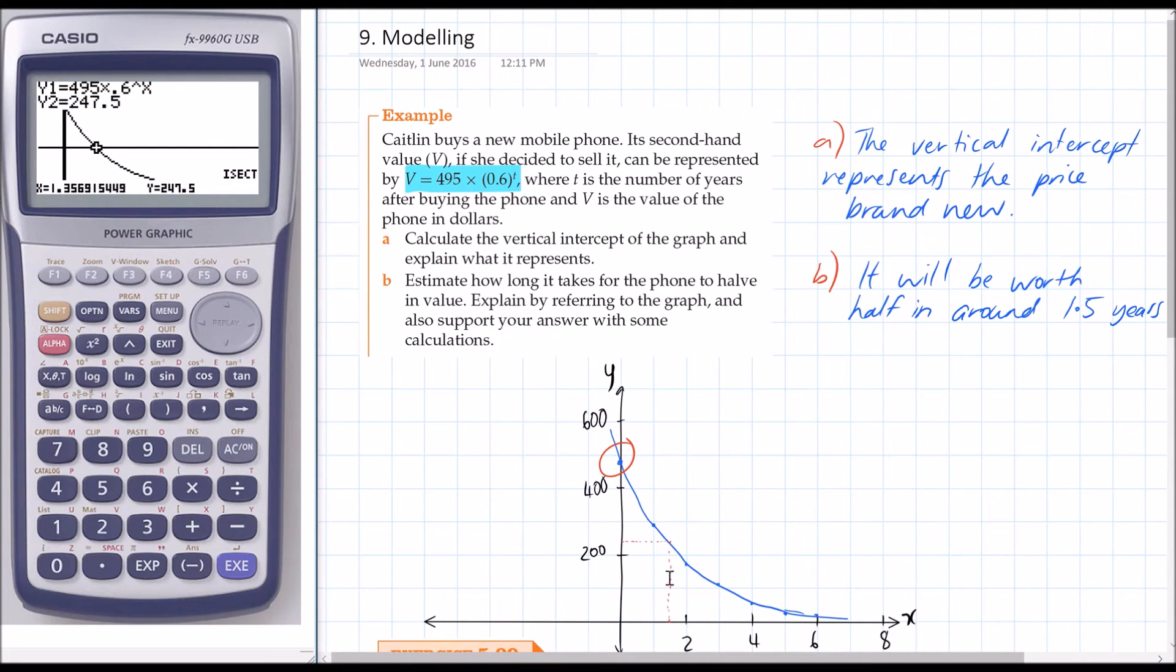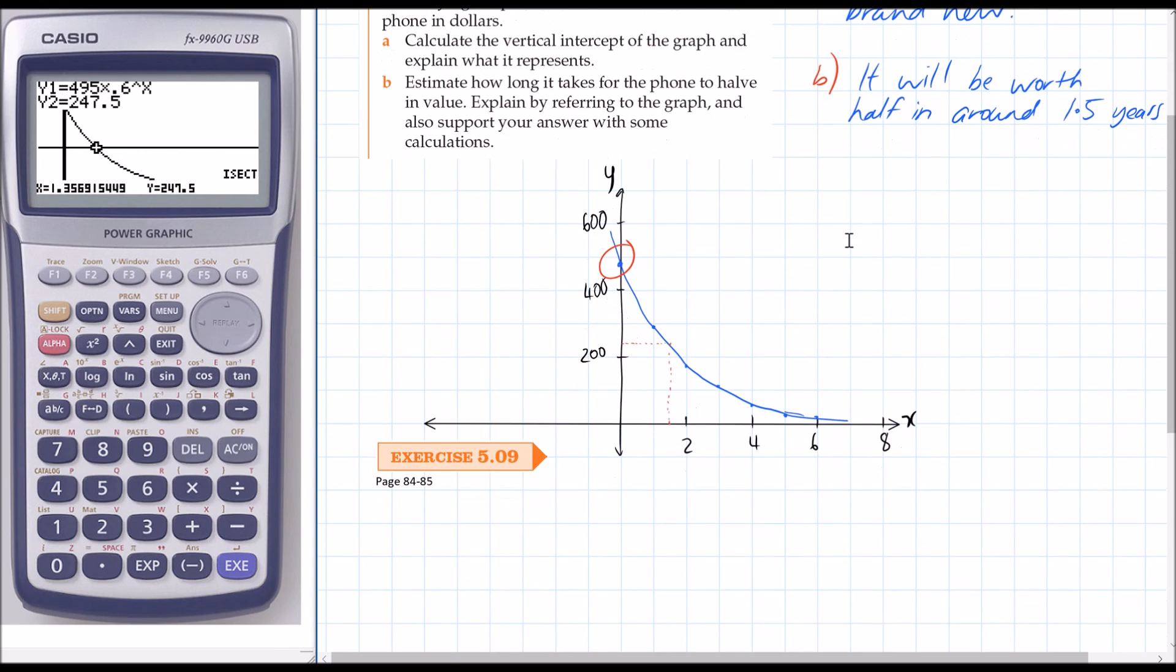So our graph is a little bit inaccurate because of hand drawing, but we're in the right ballpark. The key thing is making sure that you draw out your graph and use that to model your situation. Have a go at exercise 5.09, please.